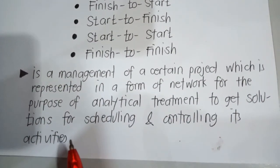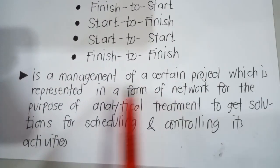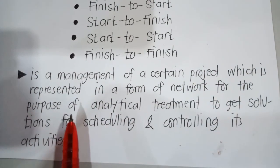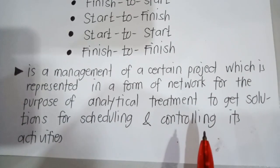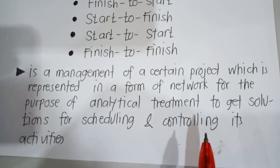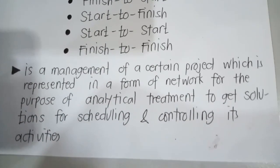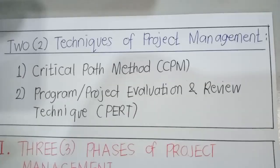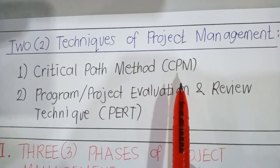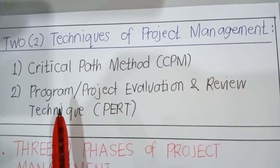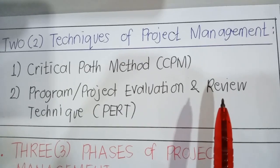Project management can also be defined as the management of a certain project which is represented in a form of a network for the purpose of analytical treatment to get solutions for scheduling and controlling its activities. Project management is divided into two techniques: the critical path method, or CPM, and the program evaluation and review technique, or PERT.